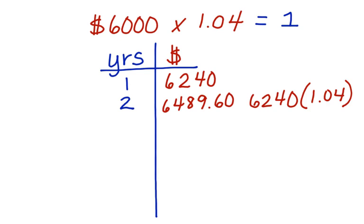Year three is going to give us $6,749.18. Year four is going to give us $7,019.15.